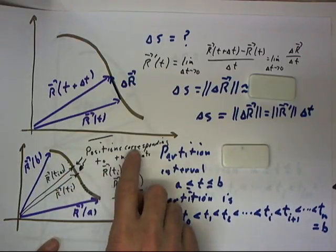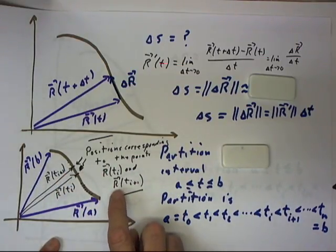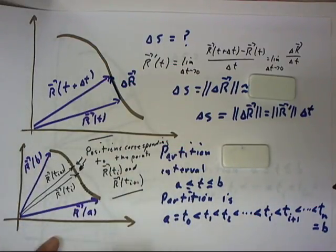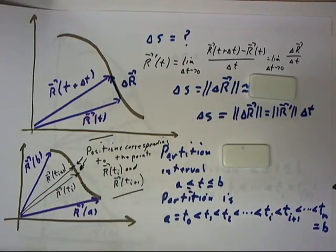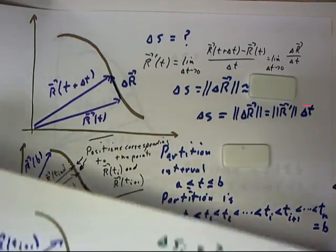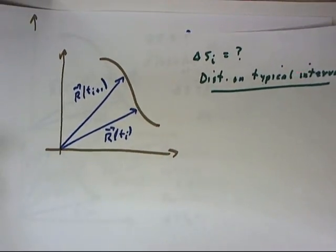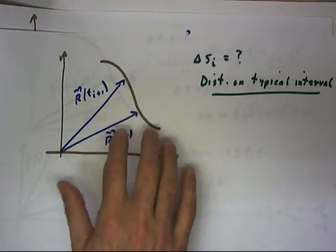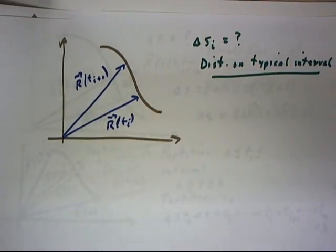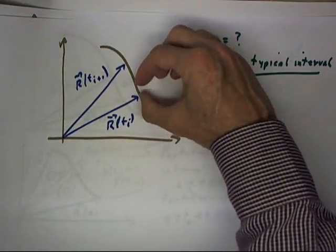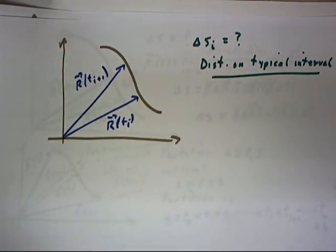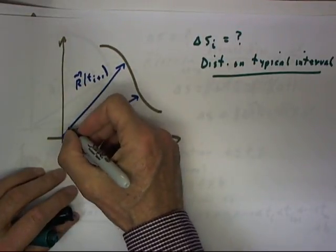And we depict the positions corresponding to the r of t sub i and r of t sub i plus 1 points of this curve. So we have this. Now, what we want to do is consider just that interval. So we're considering simply just the ith interval in the motion. Now, typically the interval will be considered to be a lot smaller than what we've depicted here. We've drawn things a little bit bigger so that we can do some labeling.